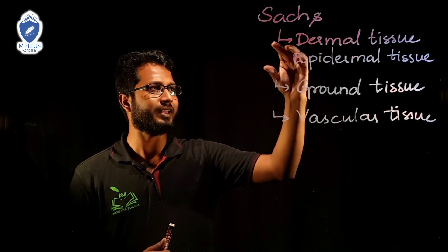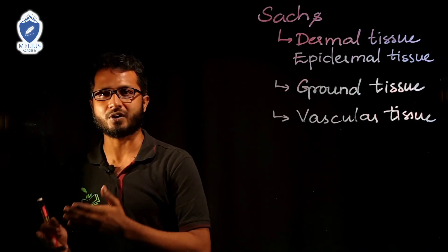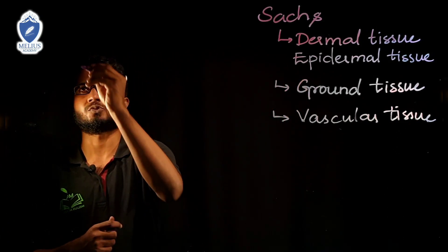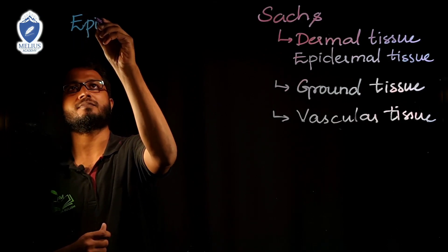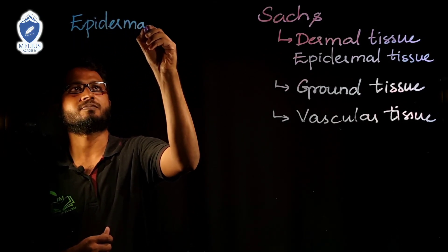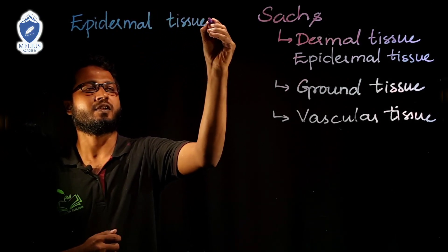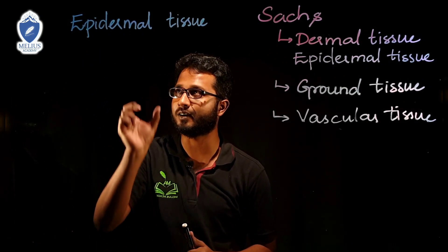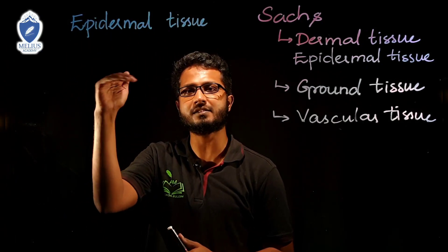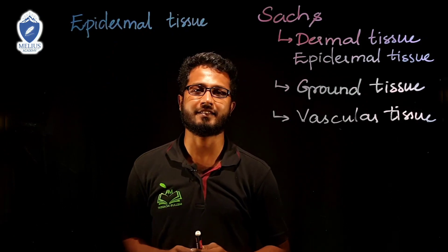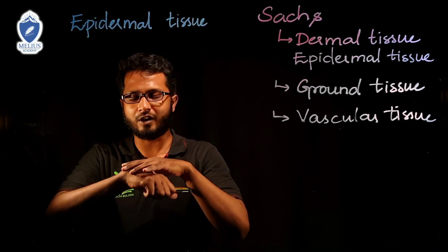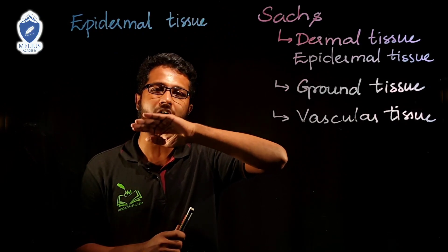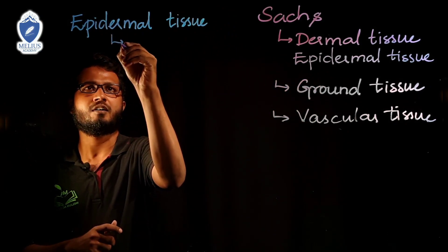Let us explore each category and understand the importance of each. Starting with dermal tissue, also known as epidermal tissue. The term has two words: 'epi' means above, and 'derm' means skin. So the outermost skin or the skin on top is known as epidermis in the plant. Epidermal tissue contains the outermost layer.